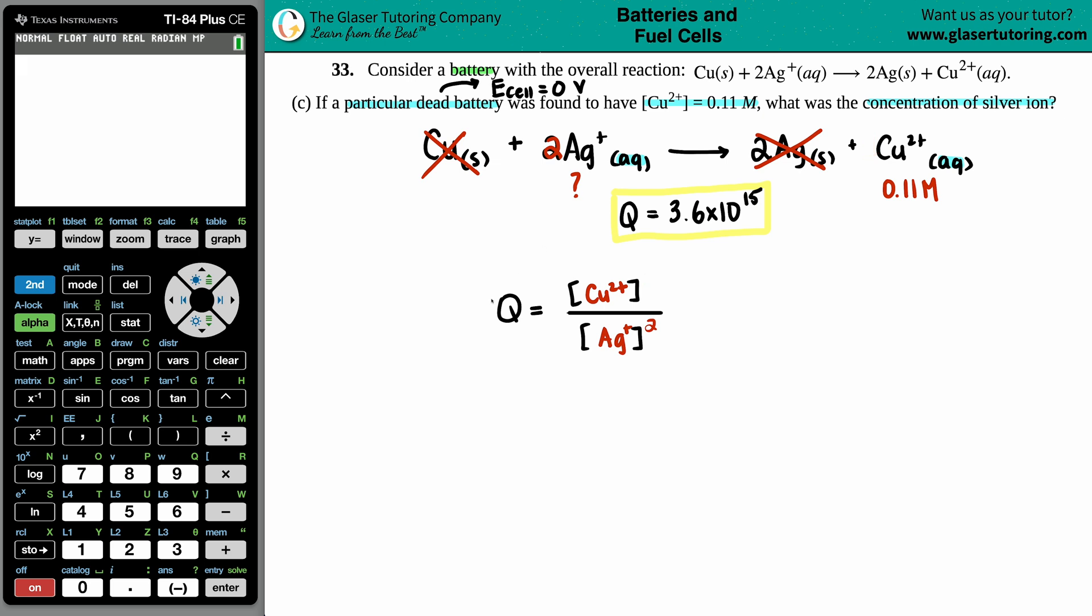So the Q value is 3.6 times 10 to the 15th. They told us that that copper was 0.11 molarity, and we're just solving for Ag plus, which is X. So let's go for it. 3.6 times 10 to the 15th equals we have 0.11 divided by X squared.